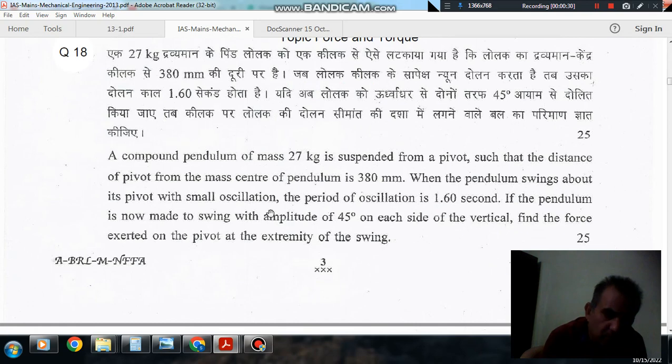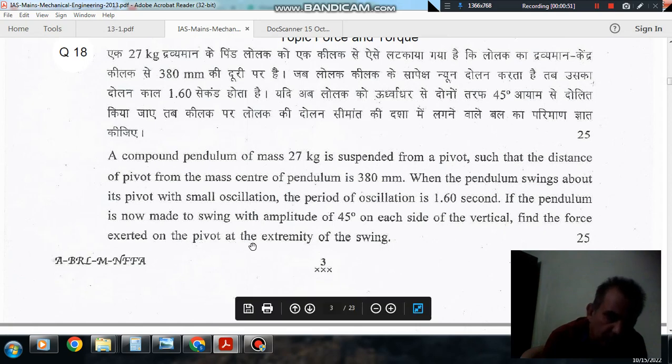When the pendulum swings about its pivot with small oscillation, the period of oscillation is 1.6 seconds. If the pendulum is now made to swing with amplitude of 45 degrees on each side of the vertical, find the force exerted on the pivot at the extremity of the swing.